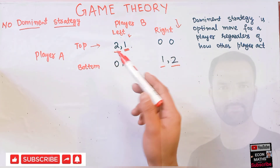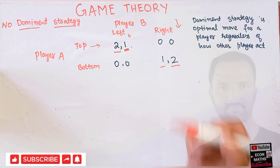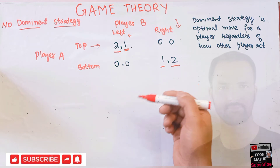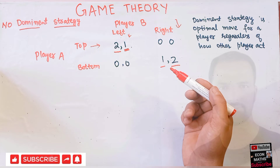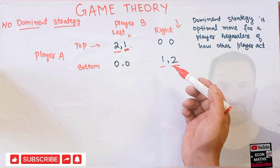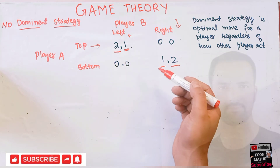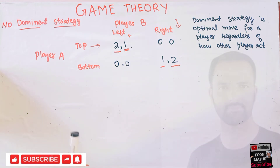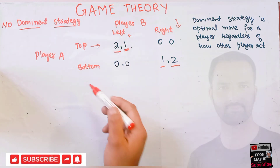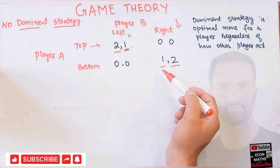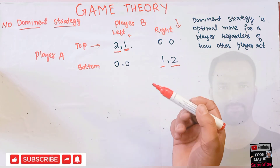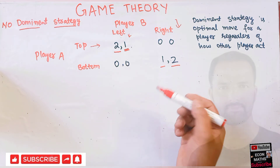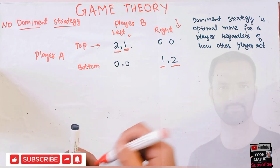Here we can see player B changes strategy as player A changes, and we can easily understand that both players don't have any sort of dominant strategy because dominant strategy does not exist here. Rather than A's choice being optimal for all choices of B, we can only require that it would be optimal for the optimal choices of B. But there is one case — we have Nash equilibrium here. We have two Nash equilibria: one where player A chooses top and player B chooses left, and another where player A chooses bottom and player B chooses right.